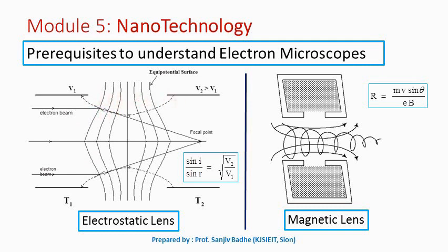Because as we go in the forward direction, potential is increasing. On the metal tube T2, we are having potential V2 which is greater than V1.